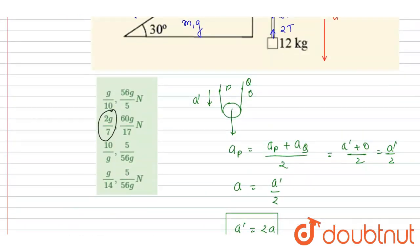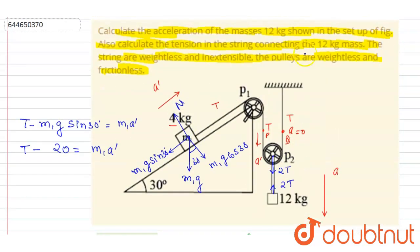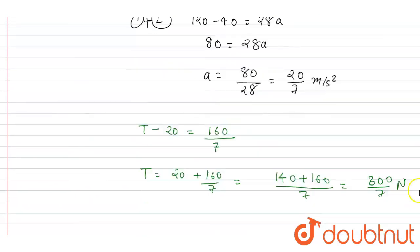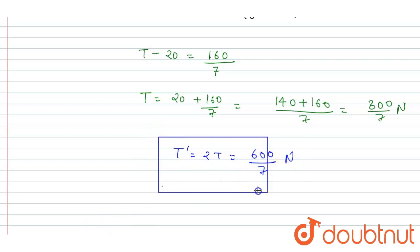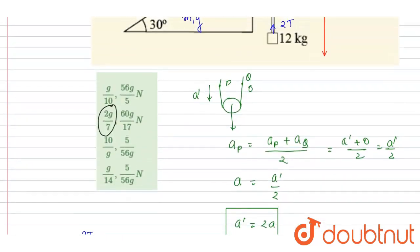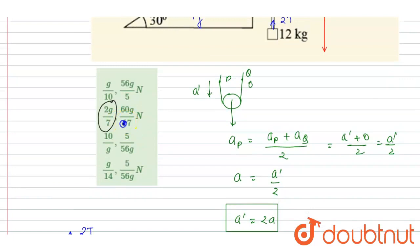We want the tension in the string connecting the 12 kg block with the pulley, which is 2T. So T dash equals 2T equals 2 times 300/7 equals 600 by 7 newtons. This is the tension. Checking the options, 600 by 7 — option B is the correct answer.